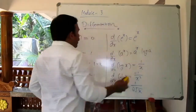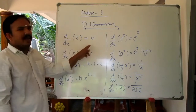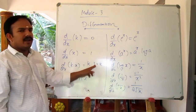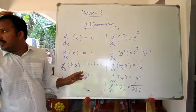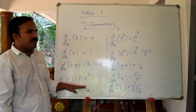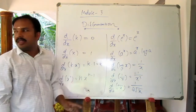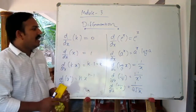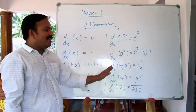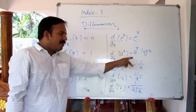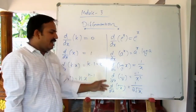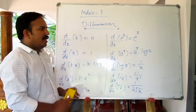Let's recap the basic formulas: d by dx of k equals 0; d by dx of x equals 1; d by dx of kx equals k; d by dx of x^n equals n·x^(n-1); d by dx of 1/x equals minus 1 by x squared; d by dx of root x equals 1 by 2 root x. These are the basics.